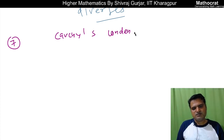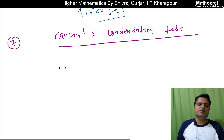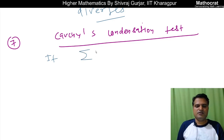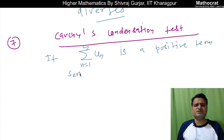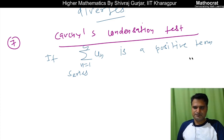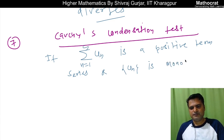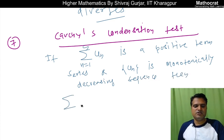This is what happens: if summation u_n, n from 1 to infinity, is a positive term series — all the tests we have discussed are for positive term series — and u_n is a monotonically decreasing sequence, then summation u_n...